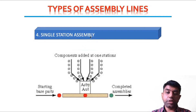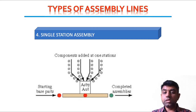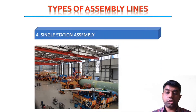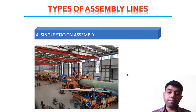The fourth and last type is the single station assembly unit, where there is only one assembly station. The base part remains fixed while different components are brought to that single station, assembled, and then the complete assembly is passed out. The best example is the aircraft industry — it is not practical to move an entire airplane from one workstation to another. Even a motherboard follows single station assembly practice, where resistors, RAM, ROM, and other components are provided at that single station.